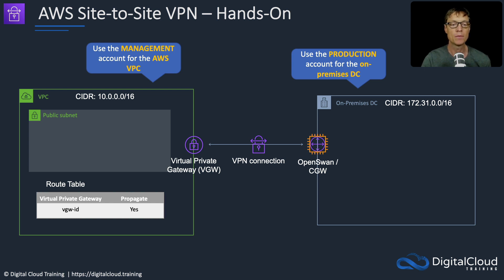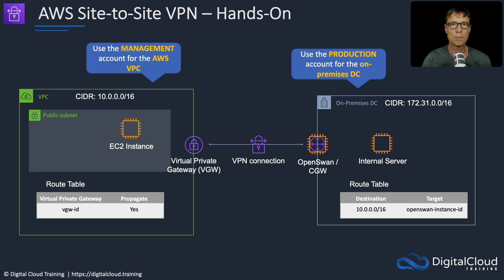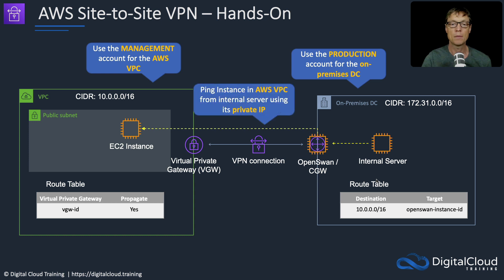The route table in the AWS VPC will have propagation turned on for the virtual gateway, meaning routes advertised via the virtual gateway will be propagated into the route table. On the on-premises DC side, we're going to add an entry pointing towards the IP CIDR block of the AWS VPC, with a target of the instance ID of the OpenSwan customer gateway. We're then going to launch a couple of instances into our respective sites — an internal server on the on-premises DC side and an EC2 instance on the other side. We want to send a ping request from the internal server, which will use the route table entry to send data to the OpenSwan customer gateway, and that's going to send it over the encrypted connection to the EC2 instance using its private IP address.